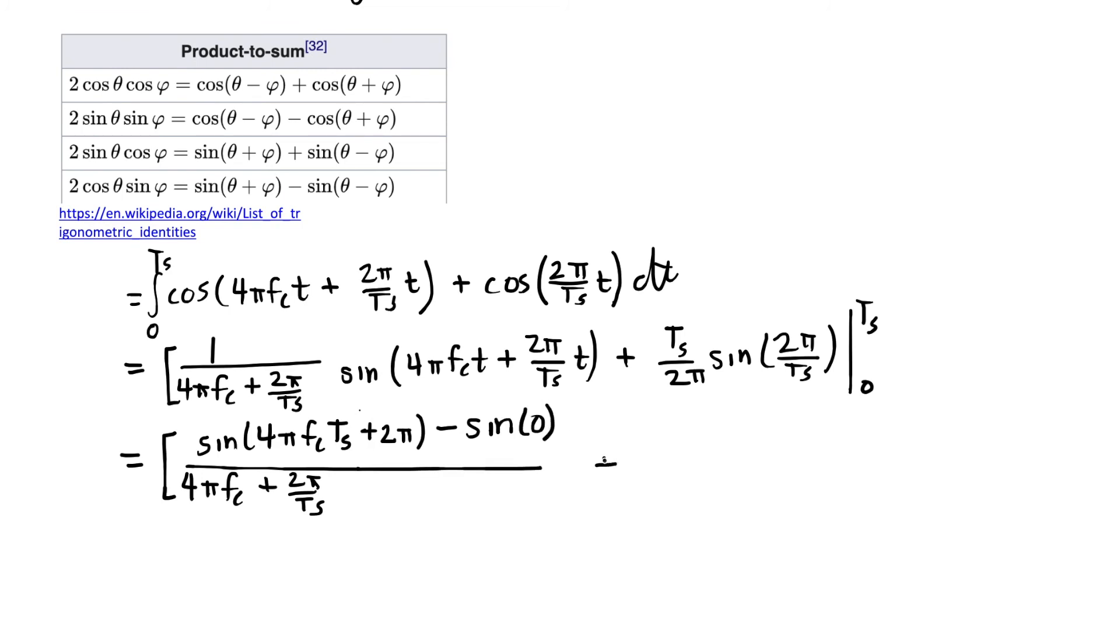And then I'm going to have the second term, t sub s over 2 pi. And a sine of, should have been a t here. I'm going to have a sine of 2 pi because, again, the t sub s and the numerator and denominator are going to cancel when I plug in t sub s for little t. And then I'm going to subtract sine of 0.